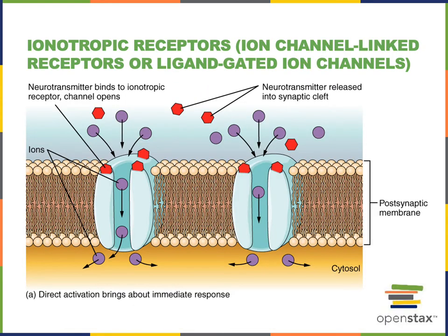Ionotropic receptors are receptors for neurotransmitters that function as ion channels. These are also known as ion channel-linked receptors or ligand-gated ion channels. The ligand is the neurotransmitter that binds to the receptor, activating a change in the shape of the receptor that opens a gate in the ion channel, allowing ions to move across the plasma membrane.